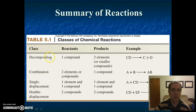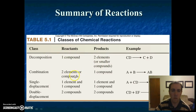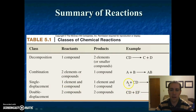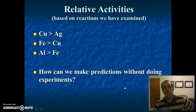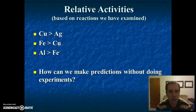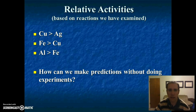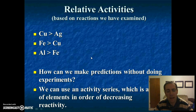So we have four types of reactions. Decomposition: one reactant makes multiple products. Combination: multiple reactants make one product. Then single displacement and double displacement. If you look at the reactants, you can easily tell these apart. Double displacement has two compounds. Single displacement has one compound and one element. Based on single replacement reactions we've looked at, we can tell that copper is more active than silver, iron is more active than copper, and aluminum is more active than iron.